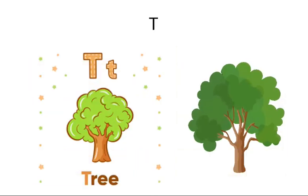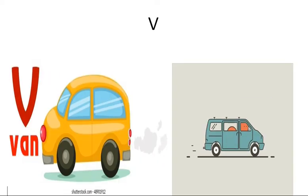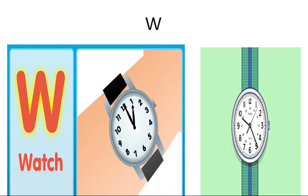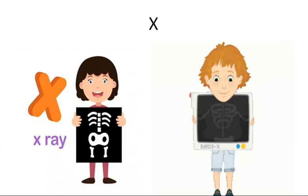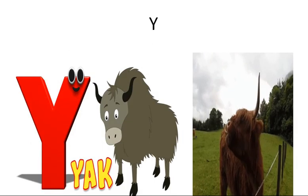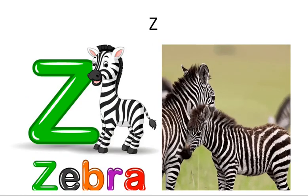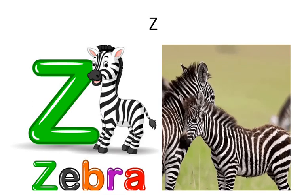T for tree, U for umbrella, V for pen, W for watch, X for exe, Y for yak, Z for sedra.